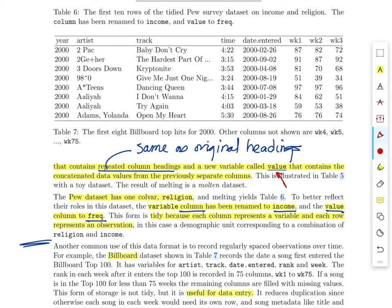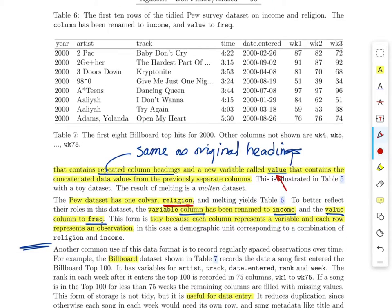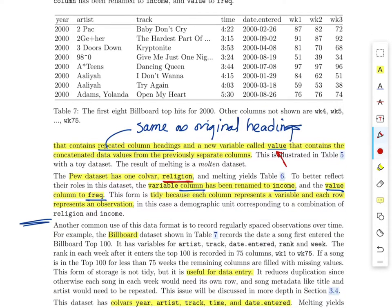The Pew data set has one colvar — religion — and the melting yields table six. He notes the variable column has been renamed to income and the value column to frequency. Here's his generic terminology — column and value — and for this particular data set after melting we get different incomes and different frequencies. He concludes that this is tidy because each column represents a variable and each row represents an observation, which satisfies two of the three criteria for tidiness. We've satisfied the first criterion with variables as columns and observations as rows, and it turns out this already satisfies the observational unit constraint.